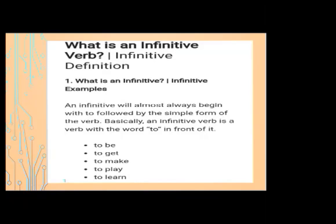For example: to be, to get, to make, to play, to learn. An infinitive will almost always begin with 'to' followed by the simple form of the verb. Basically, an infinitive verb is a verb with the word 'to' in front of it — for example, to be, to get, to make, to play, and to learn.